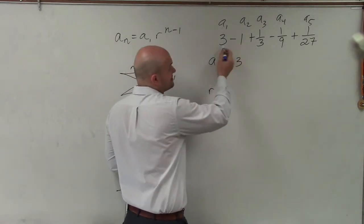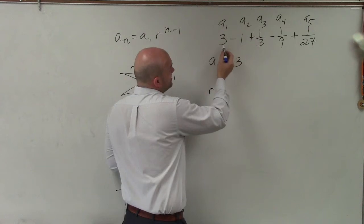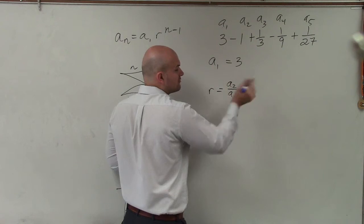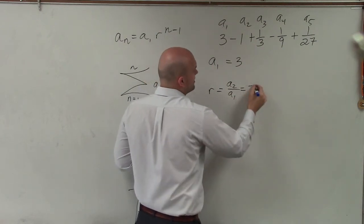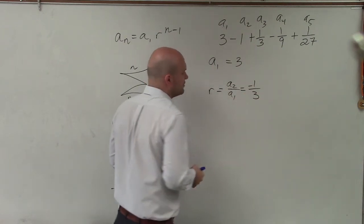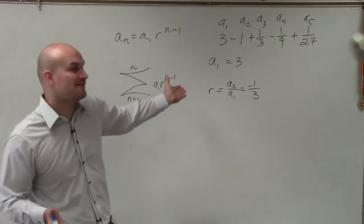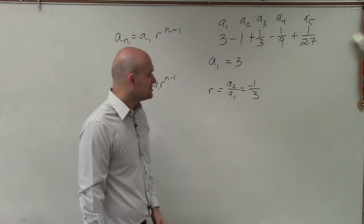To do that, rather than thinking what do I multiply by to get from 3 to negative 1, you can just take one term and divide it by its previous term. That will work for any two terms you choose. But I like doing the first two terms, because usually it's going to give you an answer you're not going to have to simplify, which is negative 1/3.